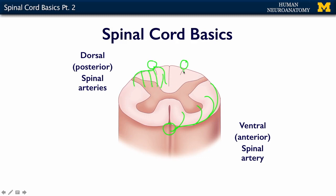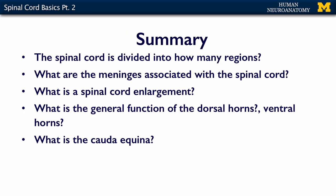Theoretically, you could have a stroke in your spinal cord just like you could have a stroke in your brain, if any of the branches of these arteries are occluded. In summary, what I want you to know for the assessment: how many regions is the spinal cord divided into? What meninges are associated with the spinal cord? Can you remember what a spinal cord enlargement is all about? What are the general functions of the dorsal horns and the ventral horns? And can you explain what the cauda equina is? If you understand these concepts, you'll do very well in the assessment.